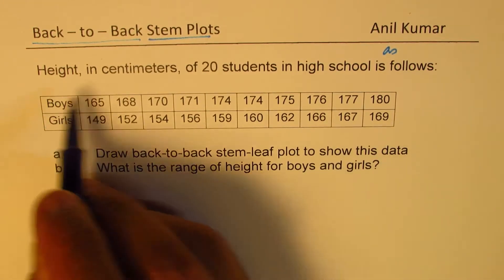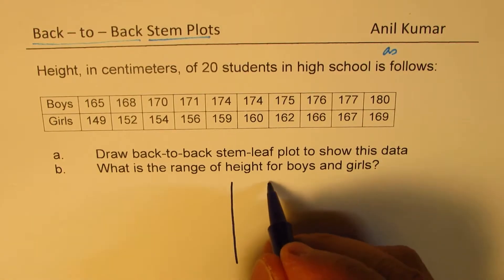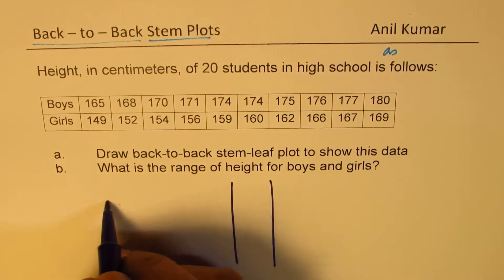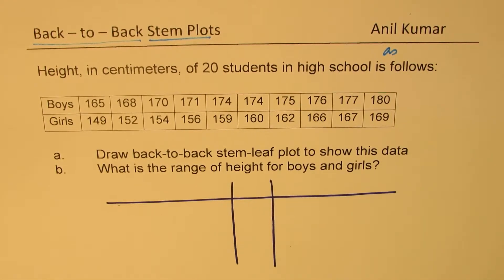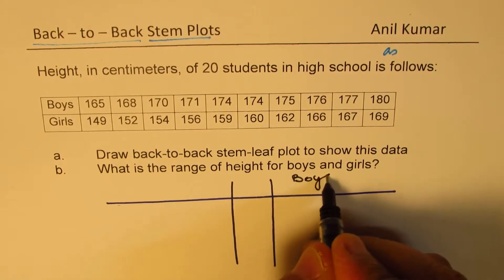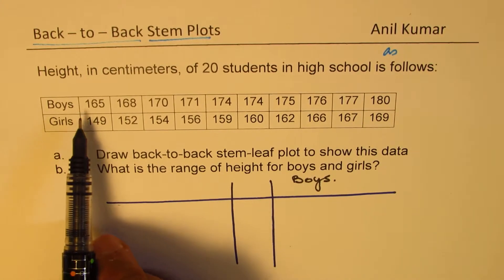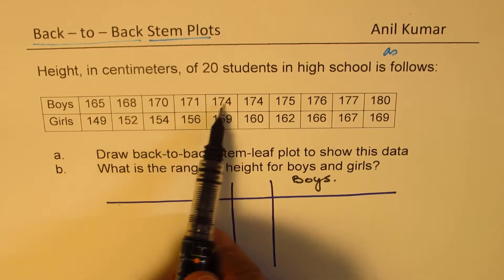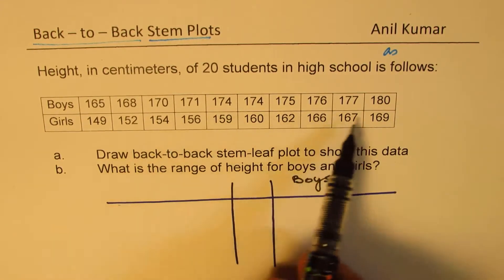Now let's see. First, let's plot boys' data. We'll do boys' data on the right side. In the STEM plot, we see that the STEM values could be 16, 17, and 18.